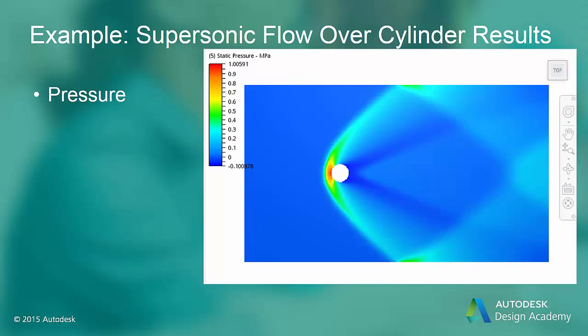The pressure plot corresponds to the other plots. The bow shock is quite distinct as is the oblique shock reflections. These reflected oblique shocks meet in the wake of the cylinder and form a shock diamond.